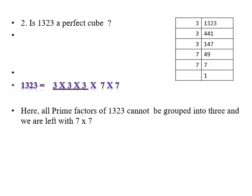Here the factors are left without forming a group of 3, and therefore we can conclude that 1323 is not a perfect cube. When prime factors are left without forming a group of 3, the given number is not a perfect cube.